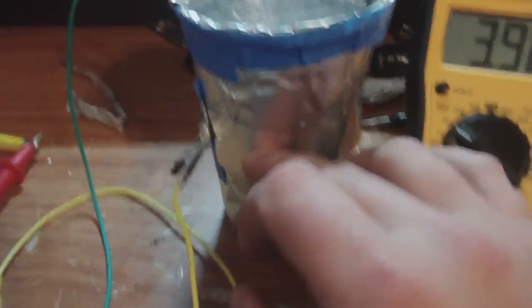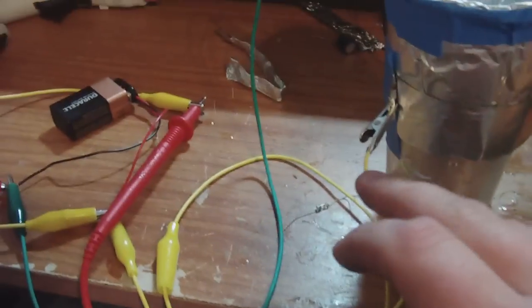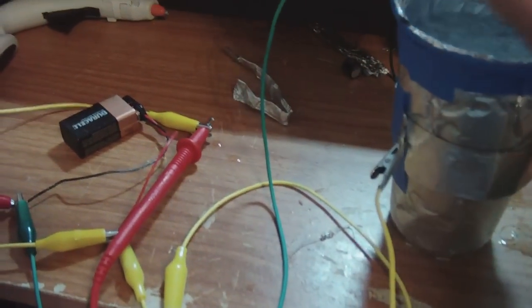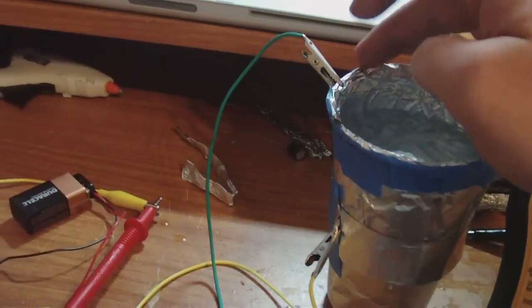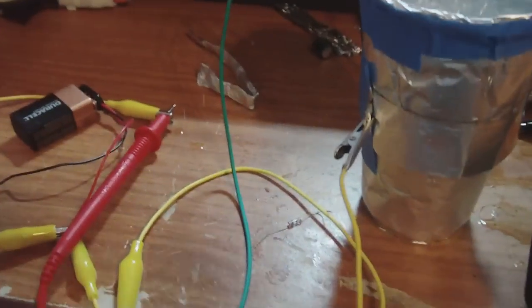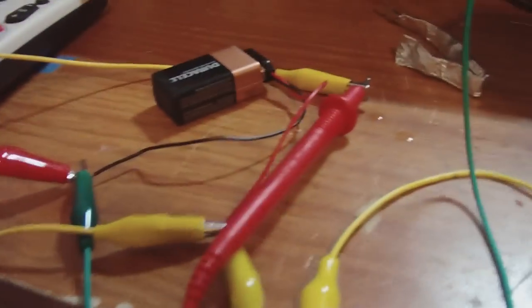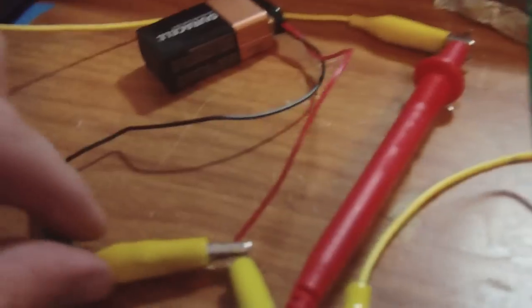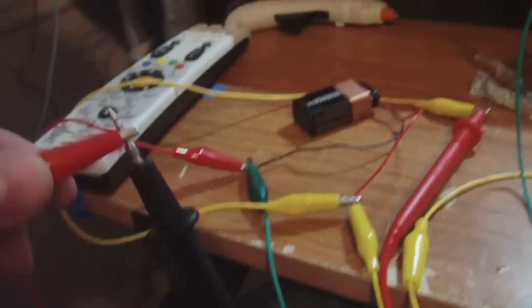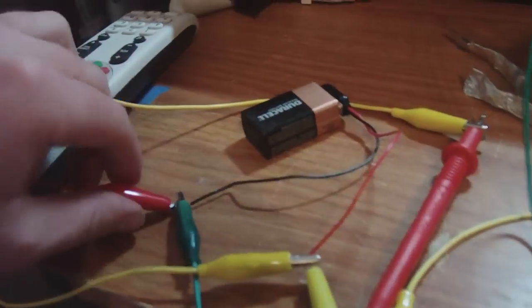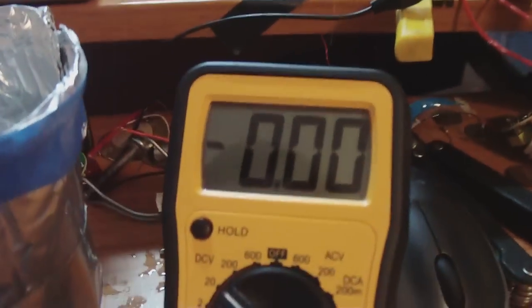And the outside aluminum foil is your positive of your 9 volt. And this piece, the inside aluminum foil is your negative. You're going to take your meter and take the positive of your meter and hook it up to the positive of the battery. Now the negative of your meter, I'm going to disconnect mine from the negative so we're not reading any voltage right now.